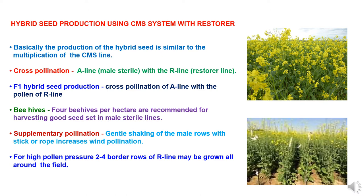Generally, 4 to 5 beehive boxes are recommended per hectare, resulting in good seed set. Another method used is supplementary pollination, where light shaking of the male rows with a stick or rope is recommended, which plays an important role in increasing wind pollination. For high pollen pressure, 2 to 4 border rows of R-line are recommended and should be grown all around the field, as wind pollination and honeybee movement will play a great role in pollination.